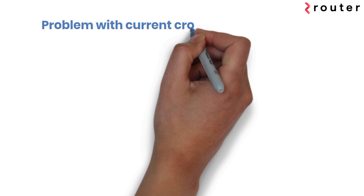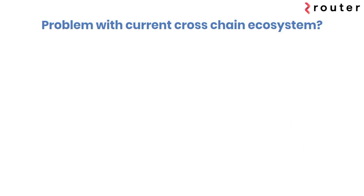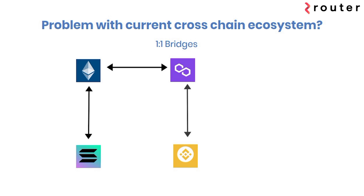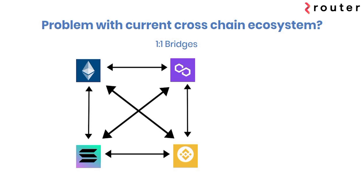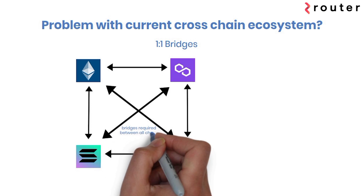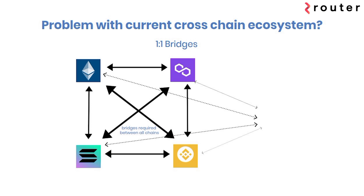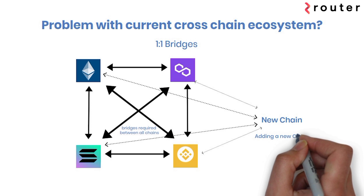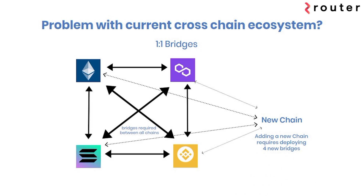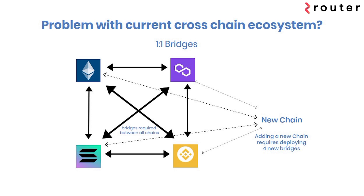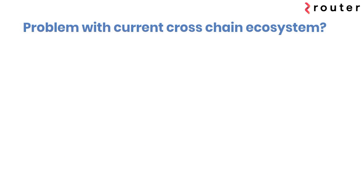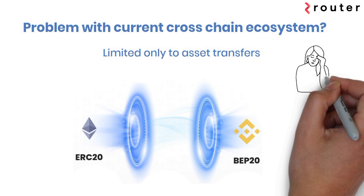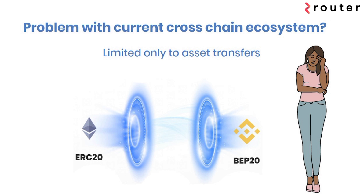What's the problem with the current cross-chain ecosystem? Most of the current crop of cross-chain infrastructures rely on 1-1 bridges to connect multiple chains. When a new chain is to be added, it requires deploying 4 new bridges, as shown in the illustration. The other problem is that it's limited only to asset transfers, such as ERC-20 and BEP-20, and not arbitrary messages.